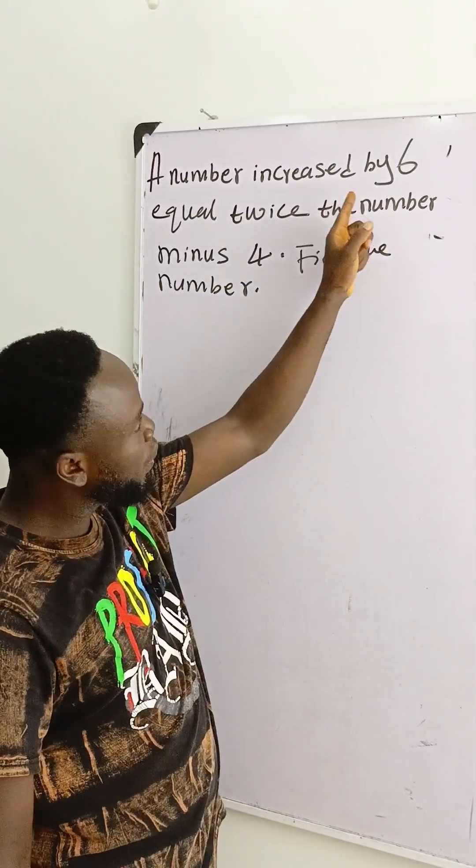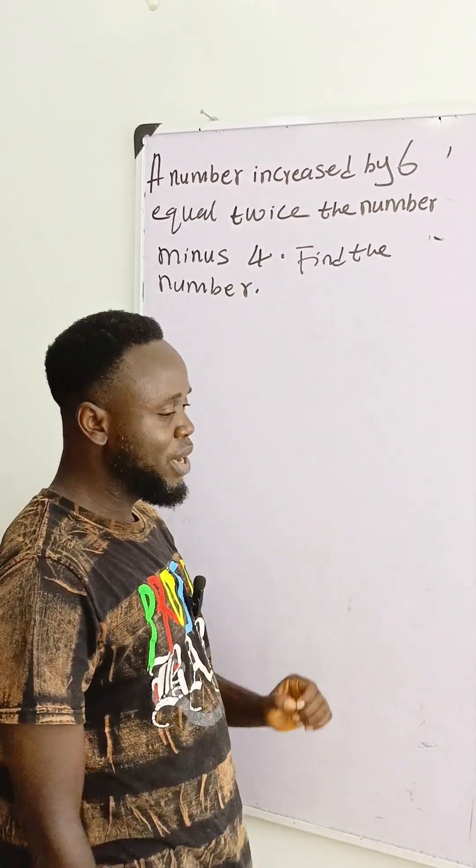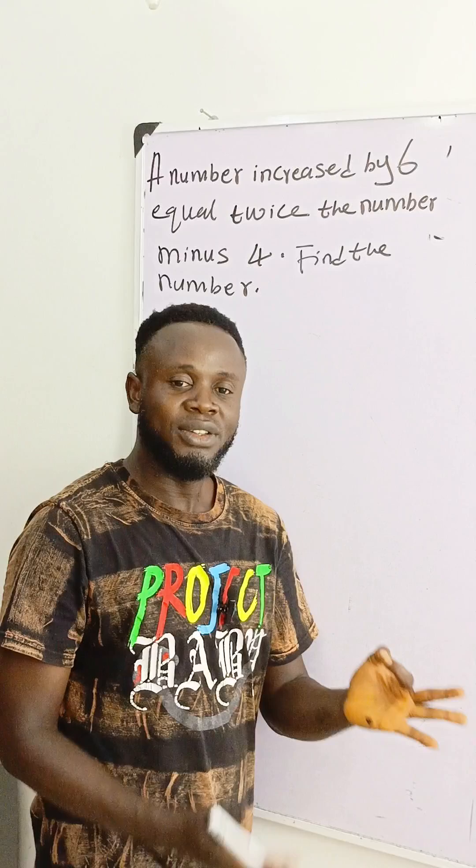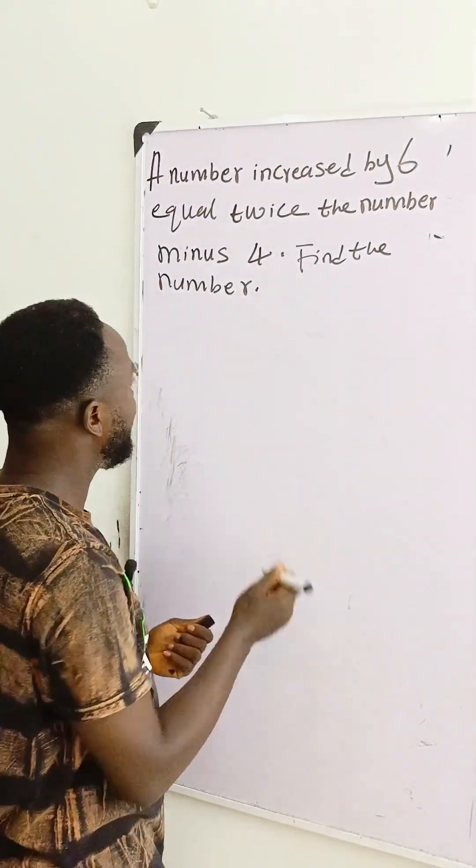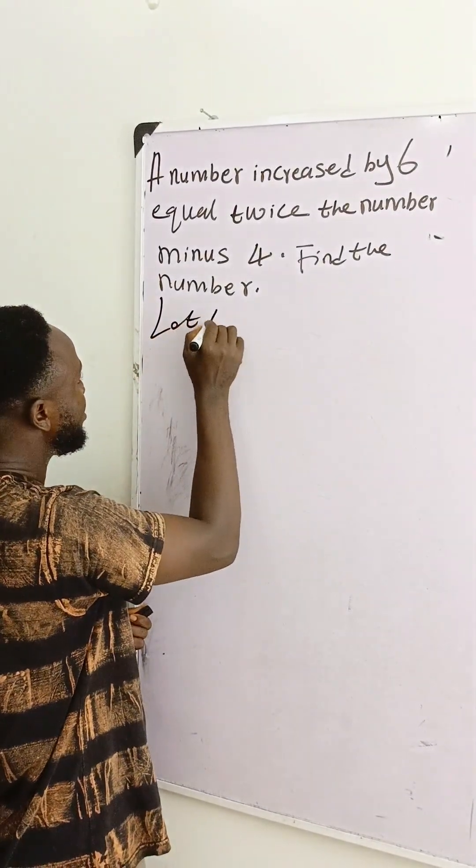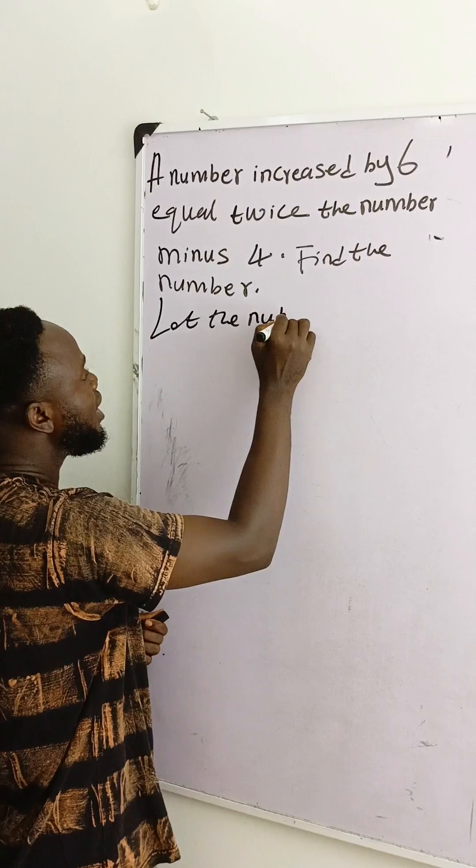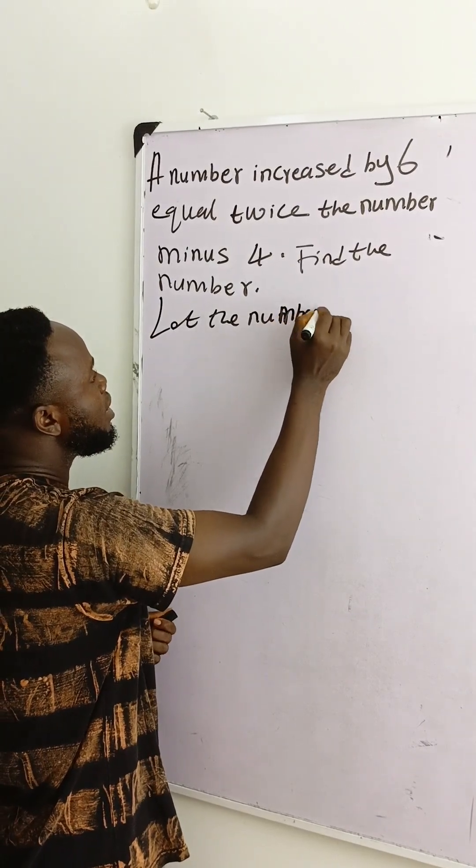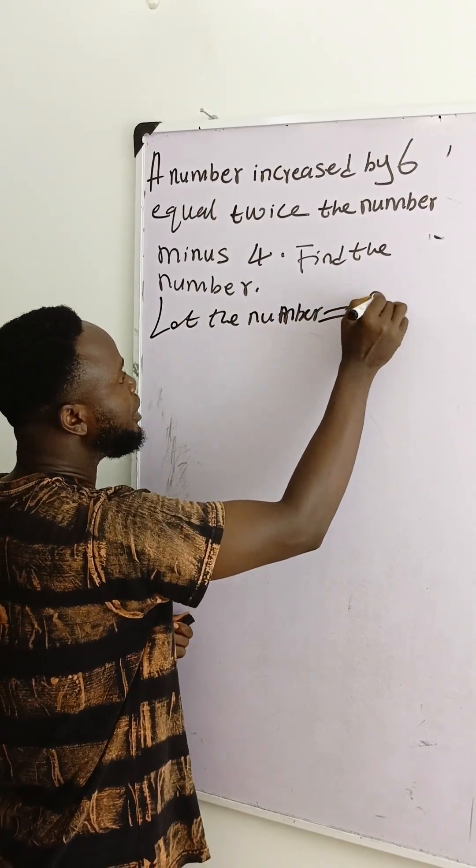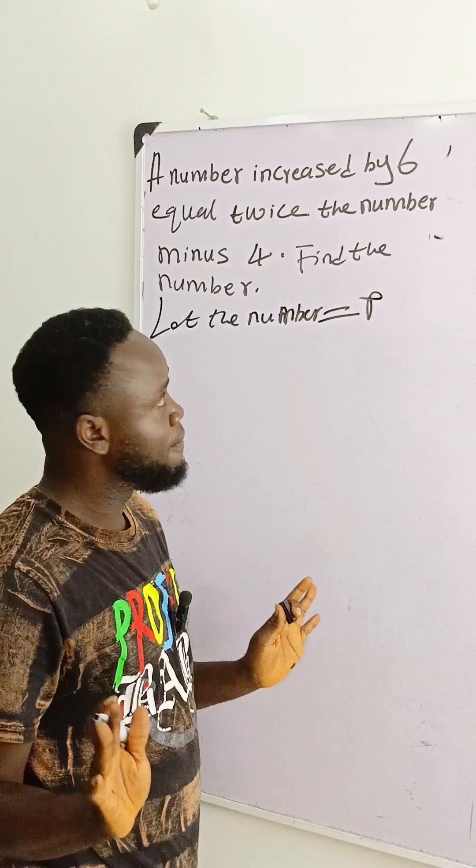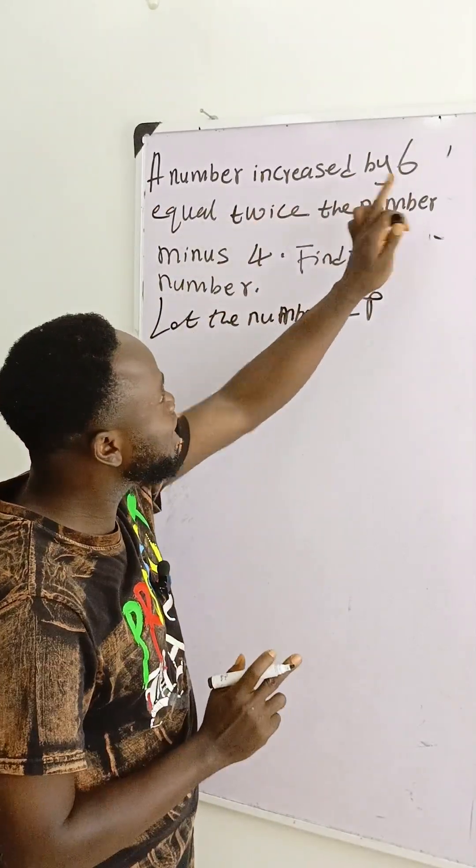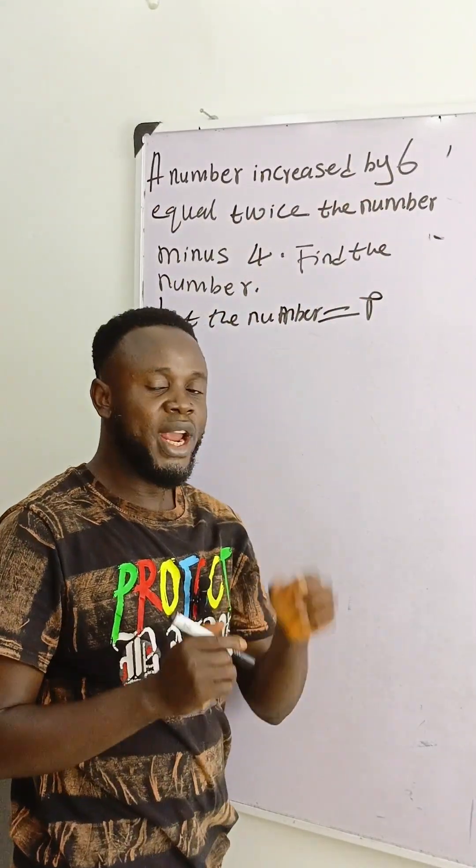A number increased by six. You heard a number - do you know the number? No. Let's say the number be equal to P. We don't know the number. It said a number increased by six. Now we have said that